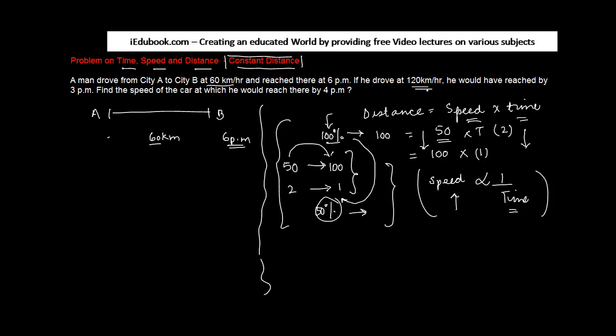If he drove at 120 kilometers per hour, he would have reached by 3 pm. So how much time will he save? He will save three hours.